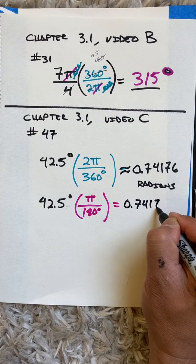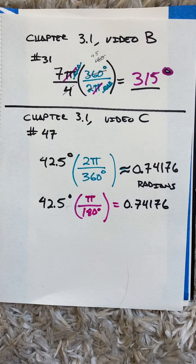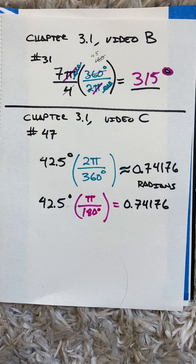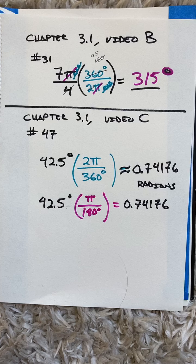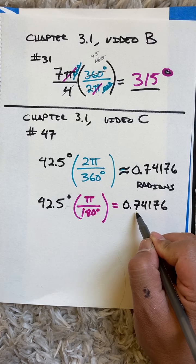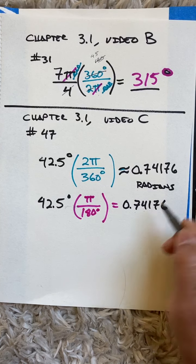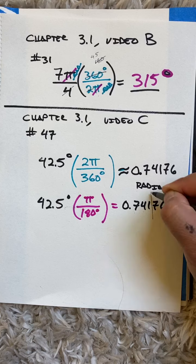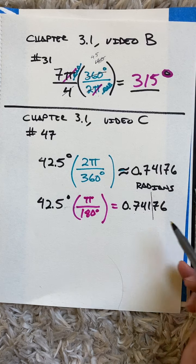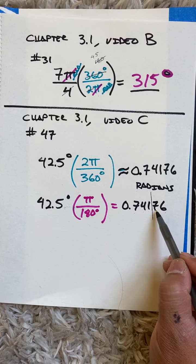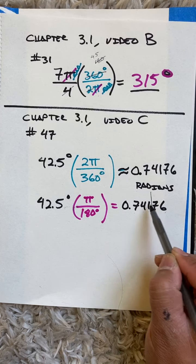Whoa, slow down. It says round to the nearest thousandth. The thousandth place is, there's the tenths, the hundredths, and the thousandths. So I have to cut this off, and because this is a seven, it's gonna add one more to here. My final answer is gonna be 0.742.